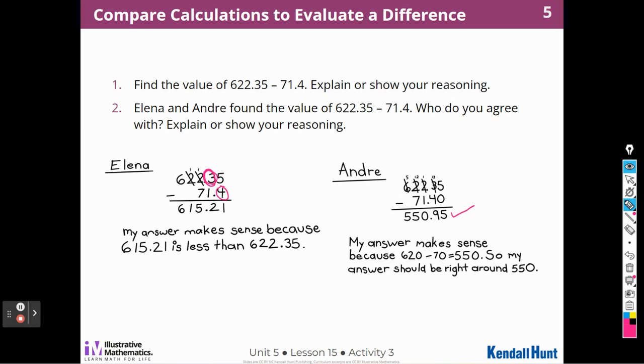So let's round and see if he is correct. I agree that 622 is very close to 620, and 71 and 40 hundredths is very close to 70, and 620 minus 70 would be 550, which is very close to what he got. Alina's does not make sense, right? She's saying that the answer is less than what she started with, so it should be correct. But it is not 70 less than what she started with. This is not 70 less, and there's 70 here, right? So no, it does not make sense.